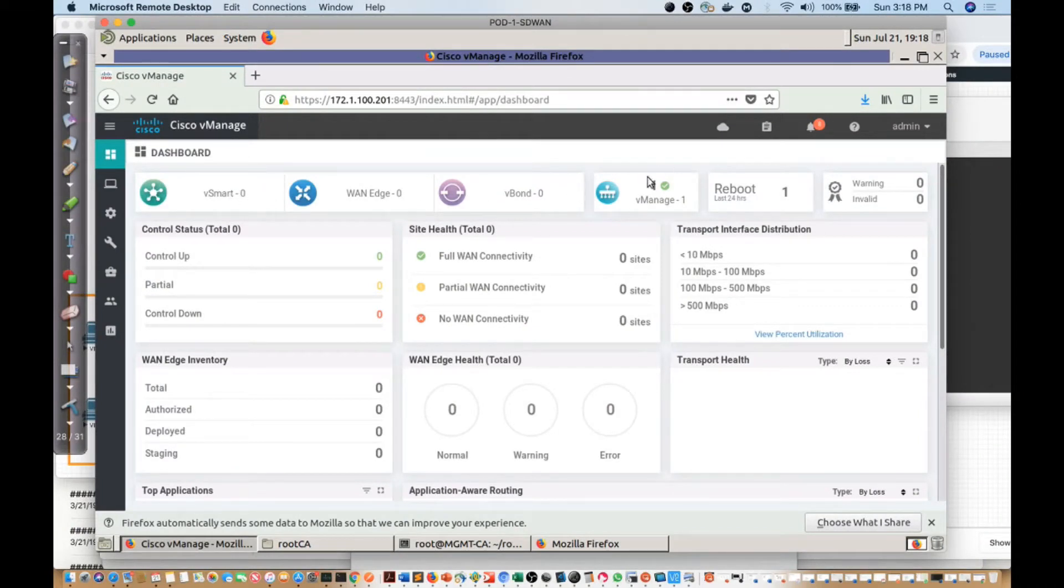What I'm talking about is right here. Notice I have one vManage that's configured, I have vBond - nothing, the WAN edge - nothing, and no vSmart registered with the system.